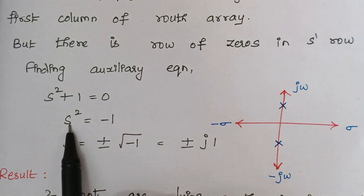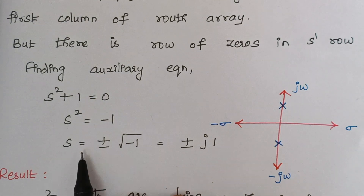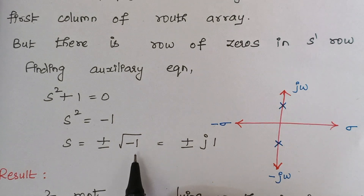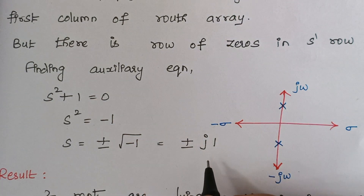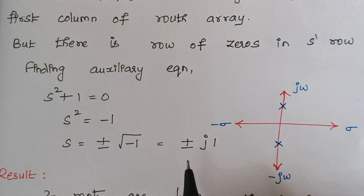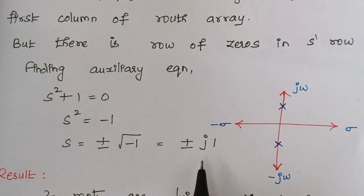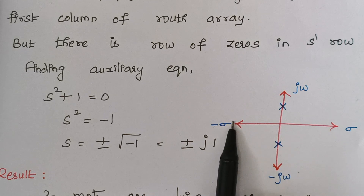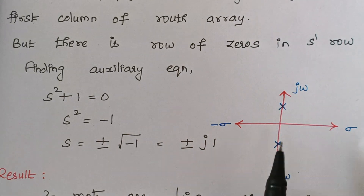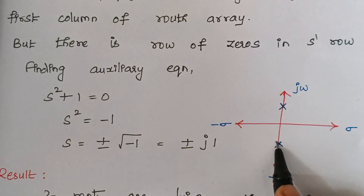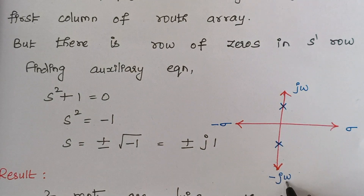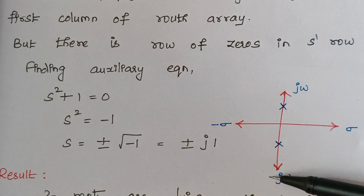Solving the auxiliary equation S² + 1 = 0: S² equals −1, so S equals ±√(−1) which is ±j. On the S-plane, this real axis and imaginary axis give us two roots: one at +j and one at −j. The roots are located on the imaginary axis.